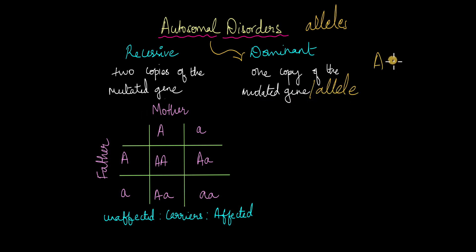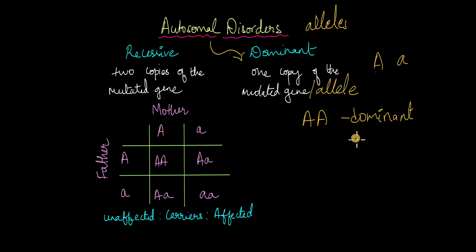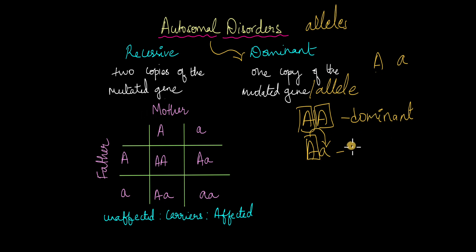Let's say there are two alleles, capital A and small a — dominant and recessive. If the genotype is homozygous dominant (AA), in the case of an autosomal dominant disorder, this condition will have the disease because you have two mutated dominant alleles. In the case of a heterozygous genotype (Aa), because there is one dominant allele which is dominant over the recessive allele, even the heterozygous condition will express the disease. In the case of homozygous recessive (aa), because there is no dominant allele, this condition will not have the disease.